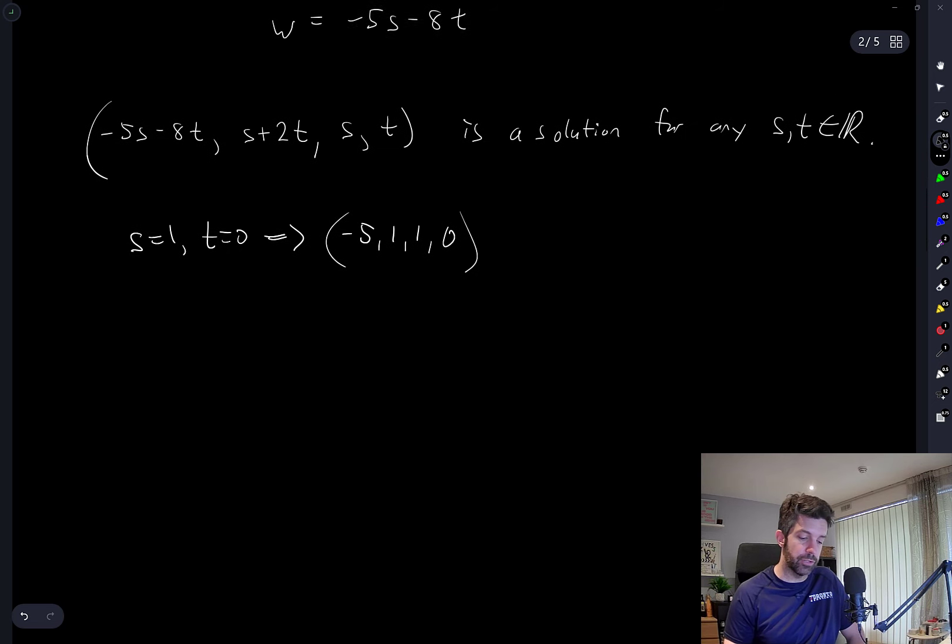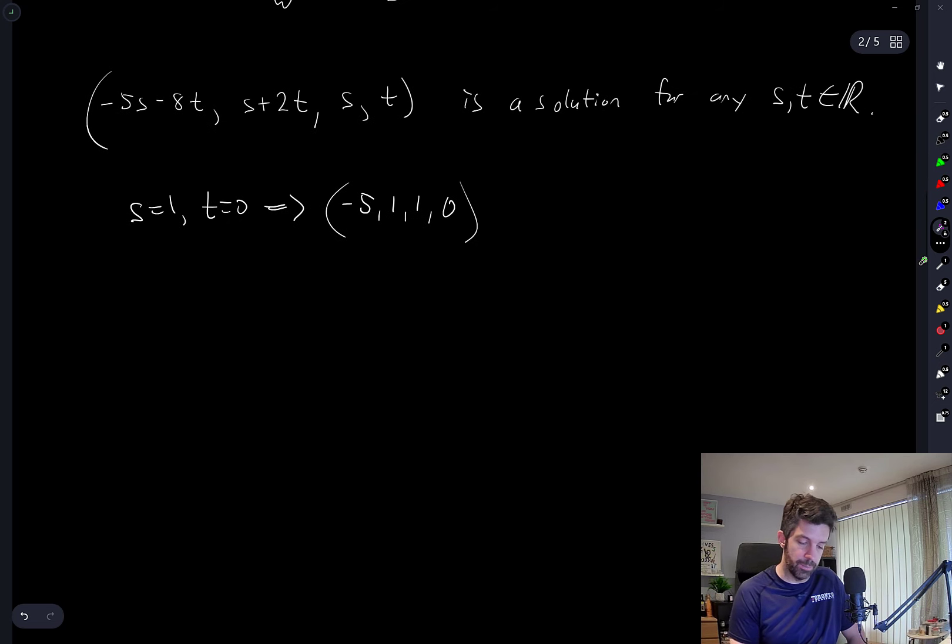But we can easily construct solutions which are not a multiple of this. So for example, if we let S equal 0 and T be equal to 1, then we get negative 8, 2.